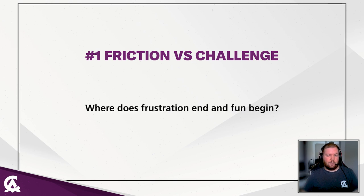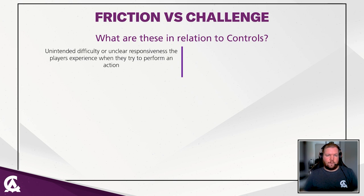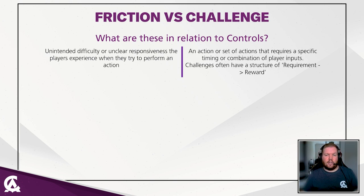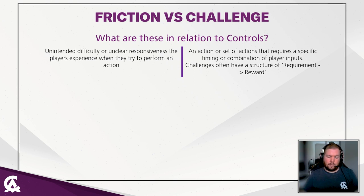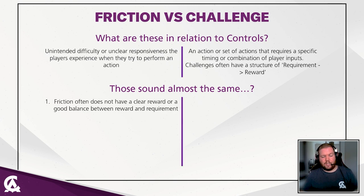How to approach designing your controls? Number one, and very important to understand, is what is friction and what is challenge — basically, where does frustration end and fun begin? Friction is basically an unintended difficulty or unclear responsiveness that players experience when they try to perform an action. Challenge is an action or set of actions that requires a specific timing or combination of player input. Challenges often have a structure of requirement followed by a reward.